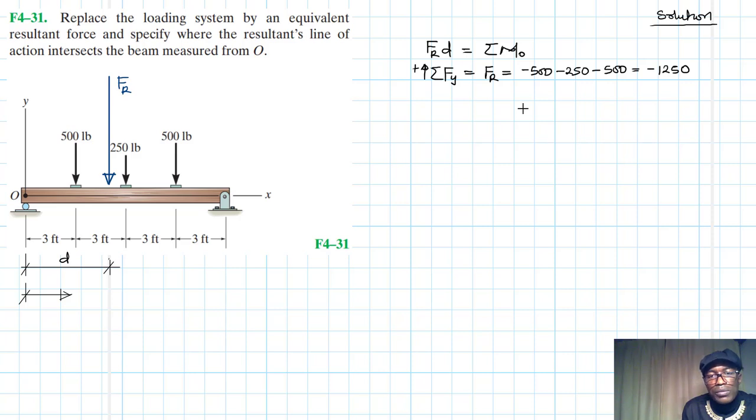And then summation of moments about point O with clockwise being our reference: this is going to be equal to negative moment 500 by 3, negative moment 250 by 6, negative moment 500 by 9. So what we have - just grab your calculator and do the calculation so that we do this work together - we have minus 7500 pound-feet. This is just pounds. The negative indicates that the direction is clockwise.